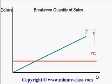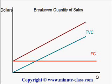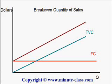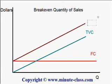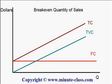The total variable cost increases when the quantity increases. By adding the fixed cost to the total variable cost, we will get another straight line, which is the total cost. And how about for the income? The more quantity we sell, the higher will be the income. Assume that the price for each unit we sell is the same.